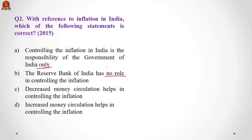There is another way to look at this. Options C and D are directly contradictory: decreased money circulation helps in controlling inflation versus increased money circulation helps in controlling inflation. When two options are completely contradictory, most likely one is right and one is wrong, so the answer must be C or D. When you increase money supply, people have more money, demand more, prices go up, leading to inflation. So decreased money circulation controls inflation, and the answer is C.